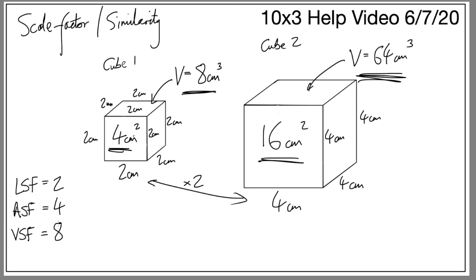So as the length scale factor is 2, the area scale factor is 4 (times by 2 squared), and the volume scale factor is 8 (times by 2 cubed). If you take the length scale factor and square it you get the area scale factor; if you cube it you get the volume scale factor. This makes sense because area is two-dimensional so you square, and volume is three-dimensional so you cube.